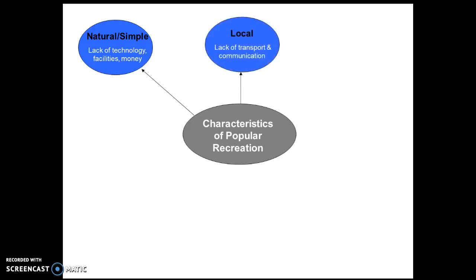Characteristic number two: popular recreations were local. The lower class had no transport or means of communication, so they had to take part in the local area. Rules couldn't spread to other areas because there was no written communication and no way of physically transporting lower class people elsewhere. All games had locally adapted rules due to a lack of transport and communication — the same village would play mob football against each other.